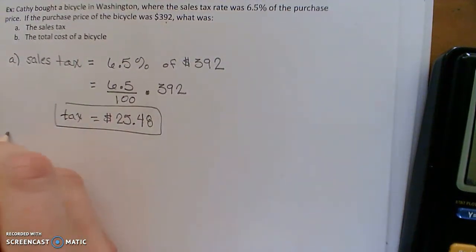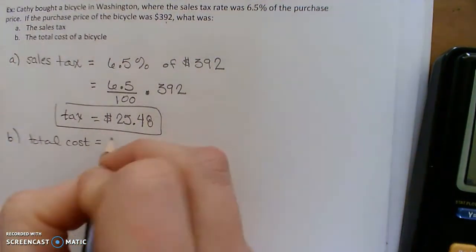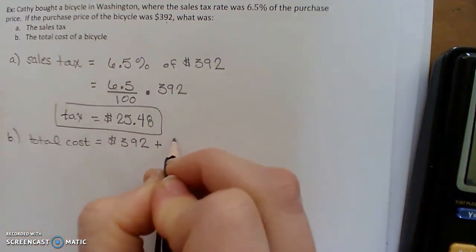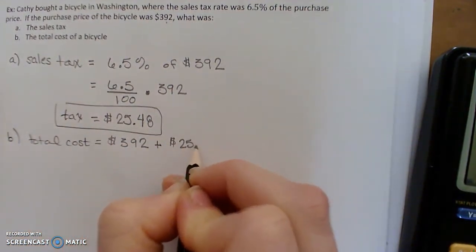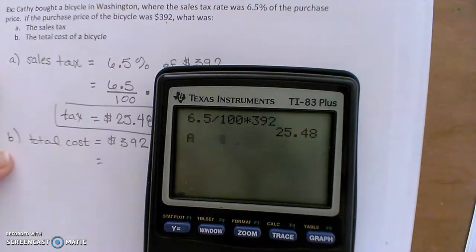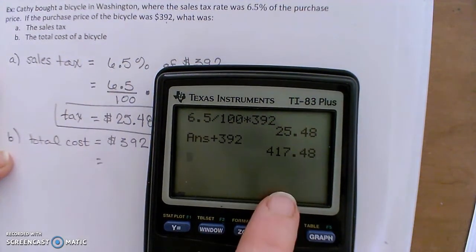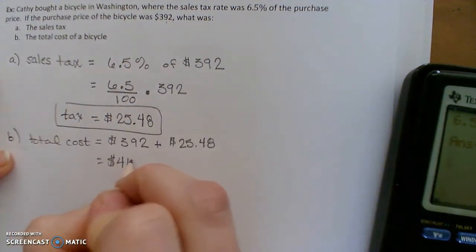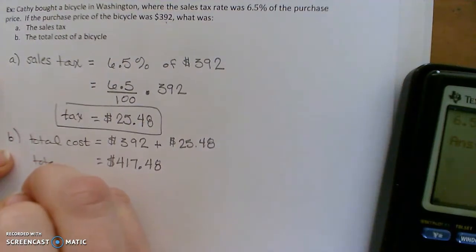So then to find the total cost, it would be the purchase price, $392 plus that $25.48. So the total cost, add the sales tax to the $392, gives $417.48. So the total cost.